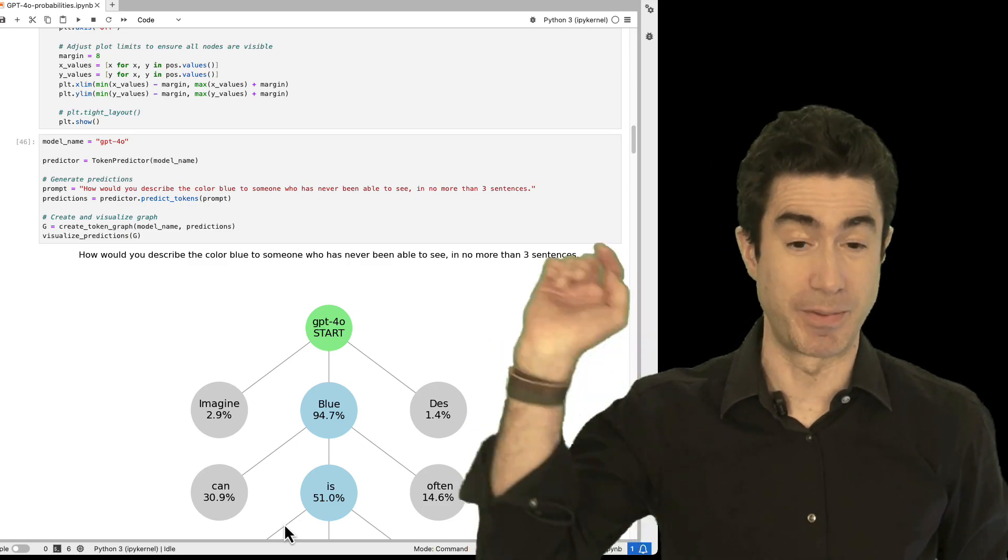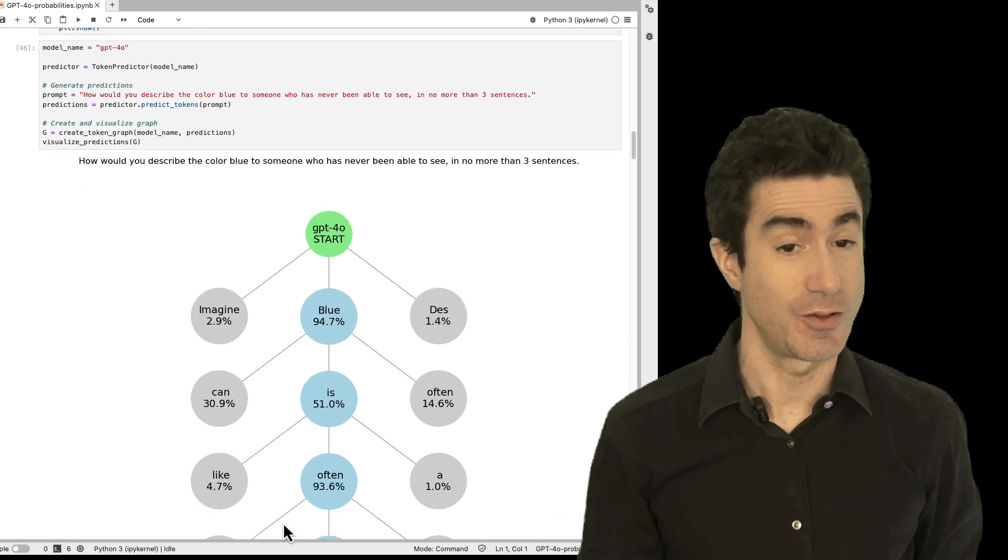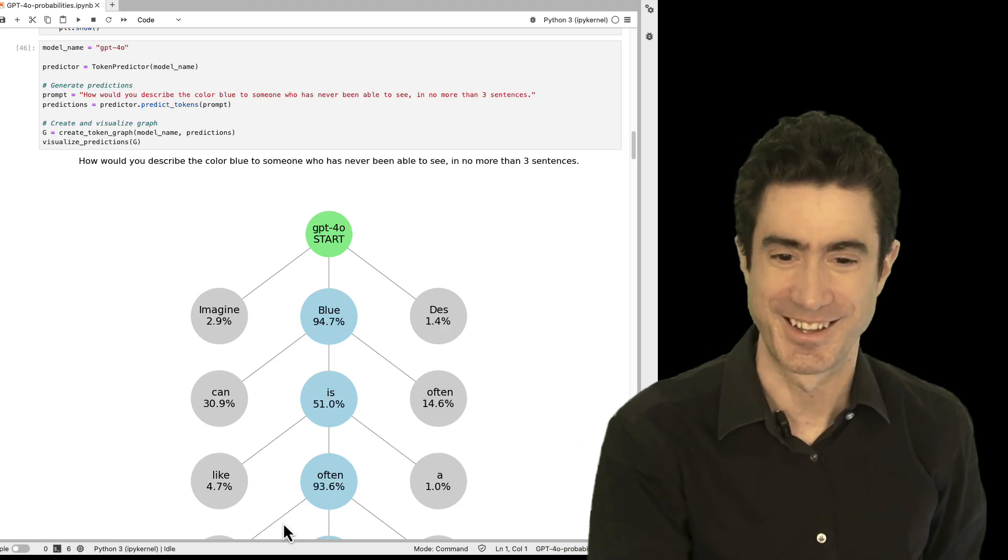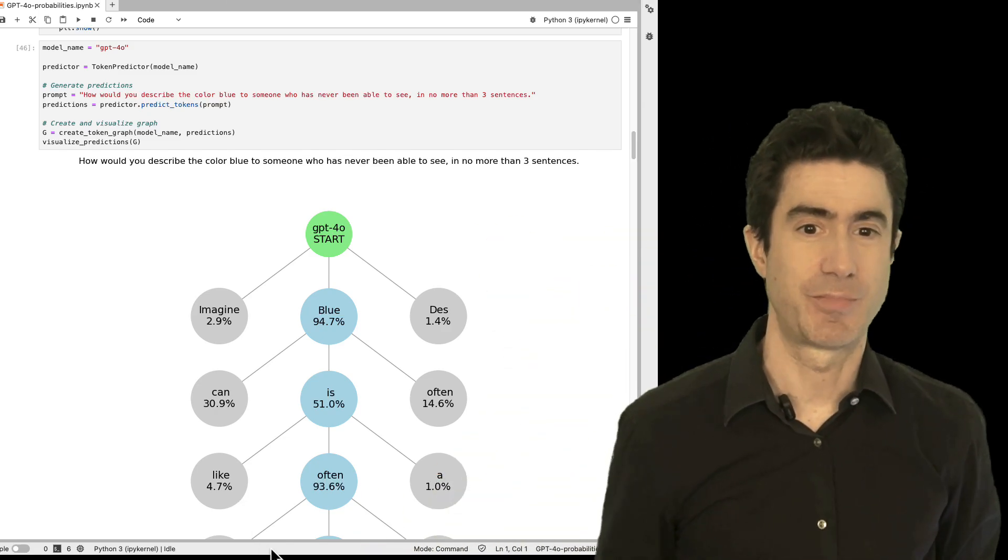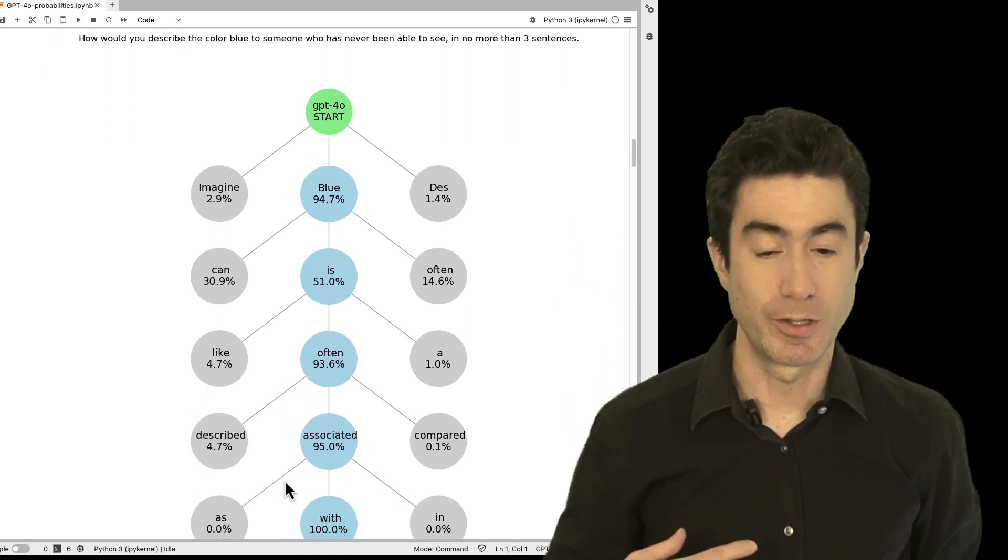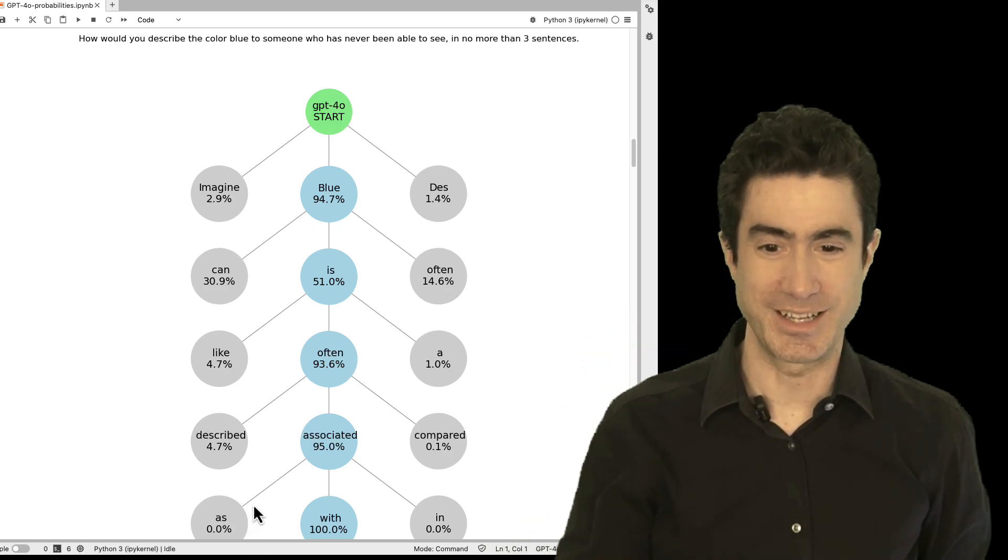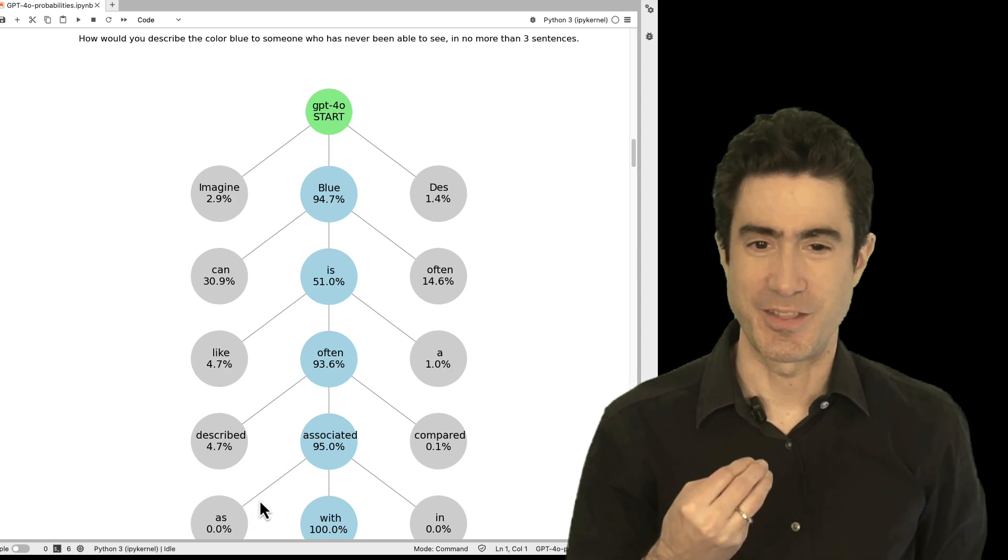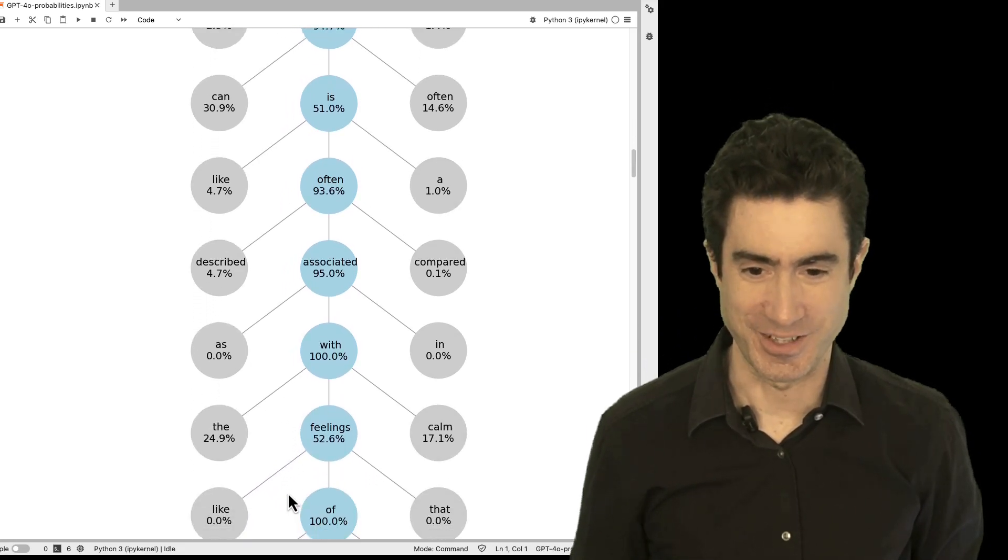So to continue the story blue and IS are selected as the highest probability and then again we generate the next likely token and the next one again there's a few possibilities often gets the highest probability because when you have something like blue is the next word is frequently often. A is another possibility and like is another possibility. It could be blue is like it could be blue is a but it was in fact the highest probability it gave was for blue is often and then to keep going blue is often associated it could have been blue is often described there is our desk from before blue is often compared but it was blue is often associated and so that becomes the most likely next token.